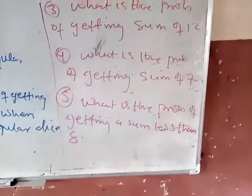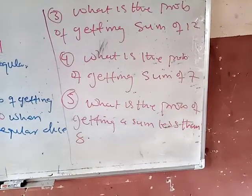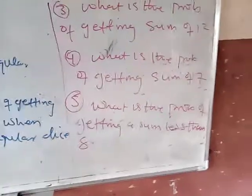What is the probability of getting a sum of seven? What is the probability of getting a sum less than eight when rolling two regular dice?